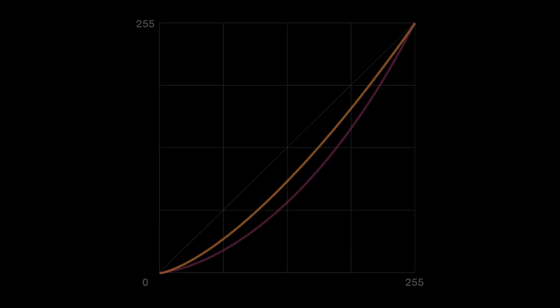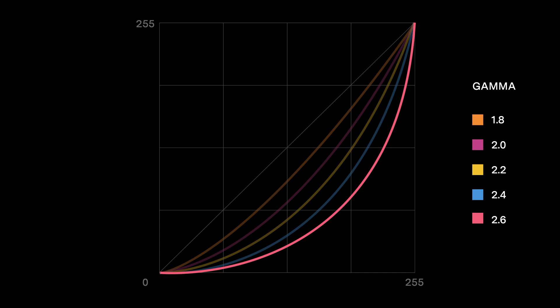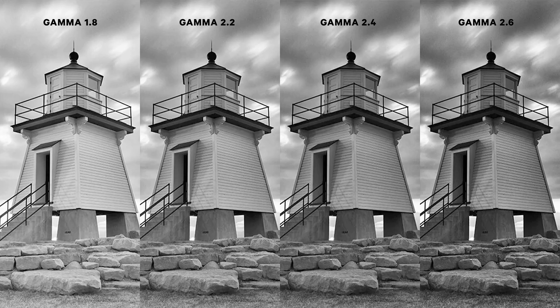Gamma is a mathematical way of quantifying contrast on a display. Think of this as a tone curve panel with black in the lower left, white in the upper right, and shades of gray in between. Films created for theaters typically use Gamma 2.6. Televisions use Gamma 2.4, while pretty much anything that's not a television uses Gamma 2.2. The higher the Gamma numerical value, the darker and more contrasty the image.